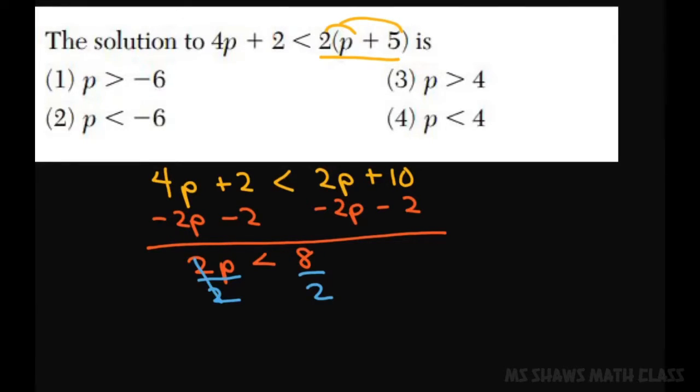And that is 1. So 1 times p is just p. So p is less than 4. And the answer would be 4.